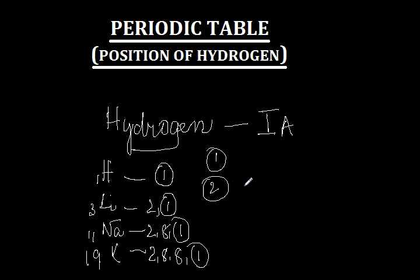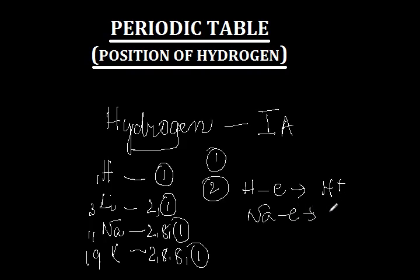Point number 2: hydrogen also gives up one electron from its atom to form cations, like sodium. Sodium also gives up one electron to form Na+. Like sodium, like lithium, potassium, etc., hydrogen also gives up one electron from its atom to form cations. This is one of the most important arguments behind keeping hydrogen in group 1A with the alkali metals.